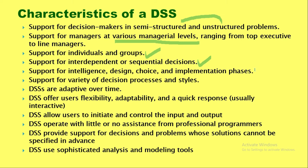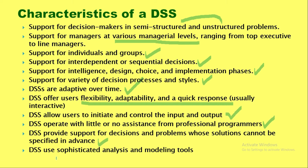DSS supports all four phases of decision making: intelligence, design, choice, and implementation. It supports various decision processes and styles, and is easily adaptable over time. It offers flexibility, adaptability, and a quick response for dynamic and rapidly changing decisions. Users can control both input and output and initiate processes. DSS can be fully automated with no or little assistance, helps where solutions cannot be found in advance, and uses sophisticated advanced analysis and modeling tools.